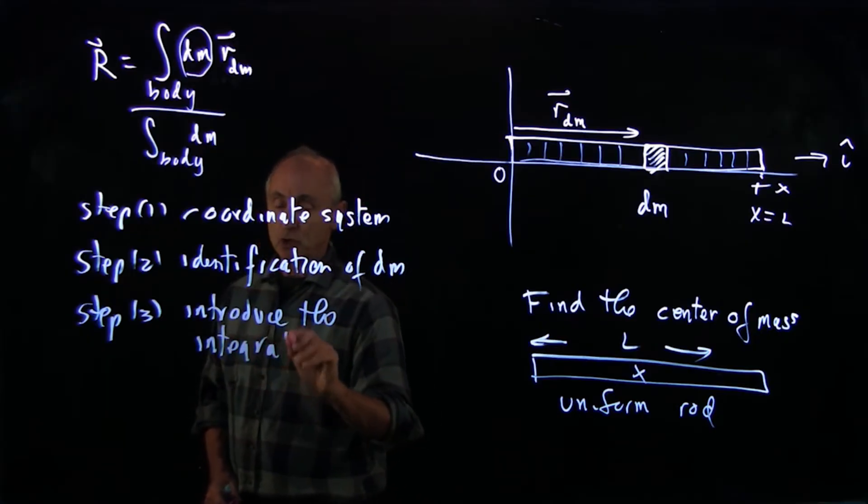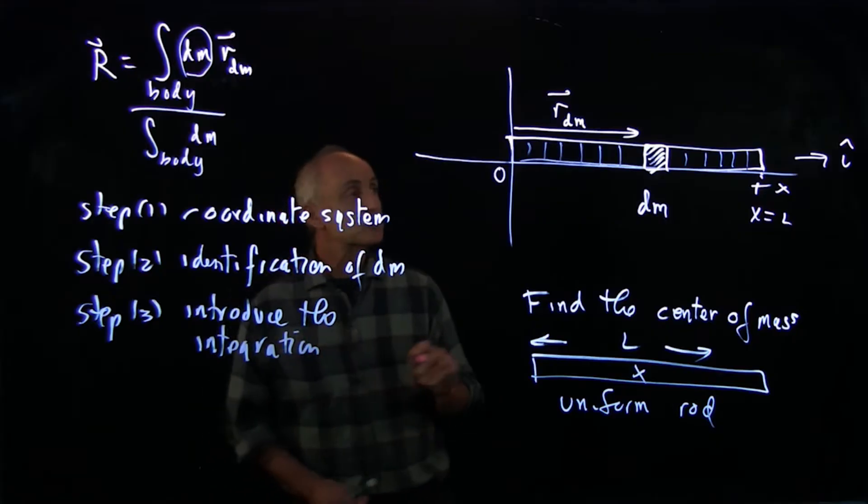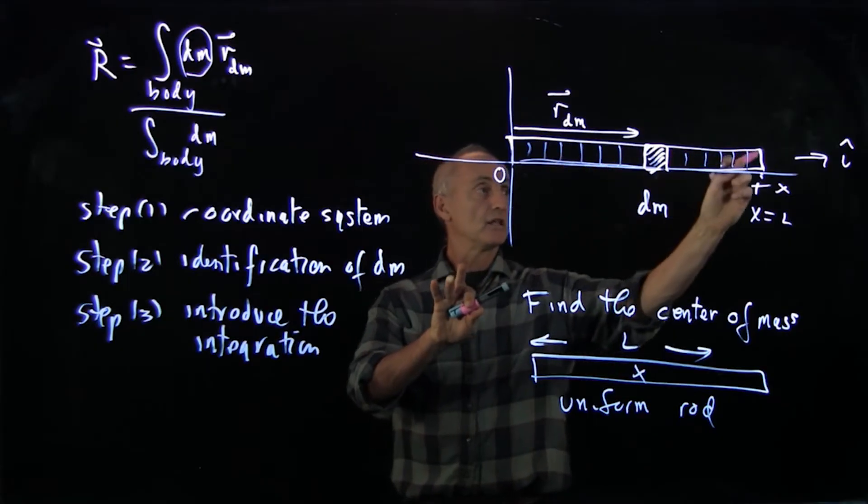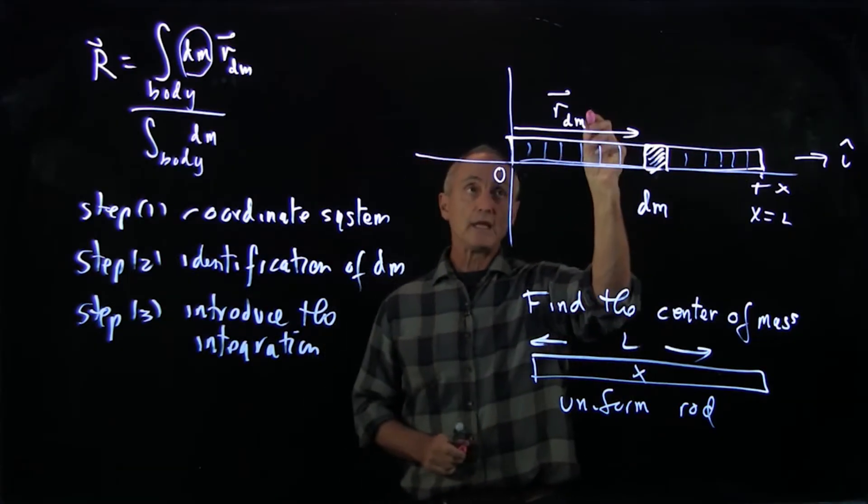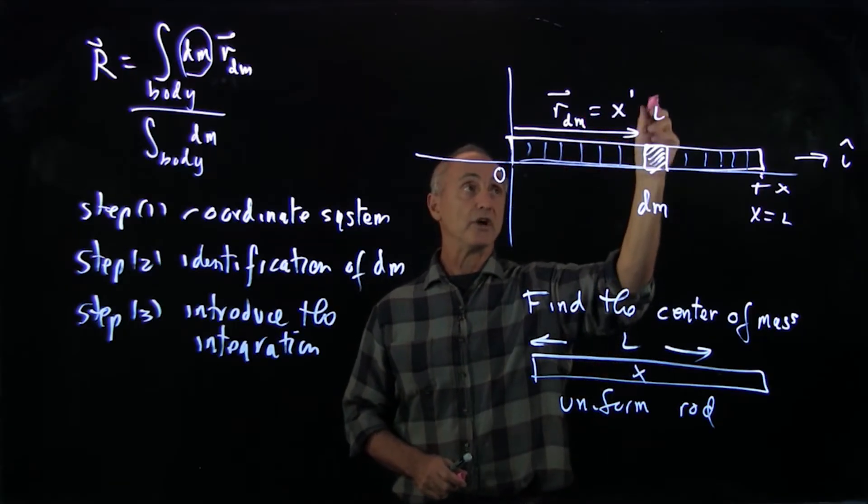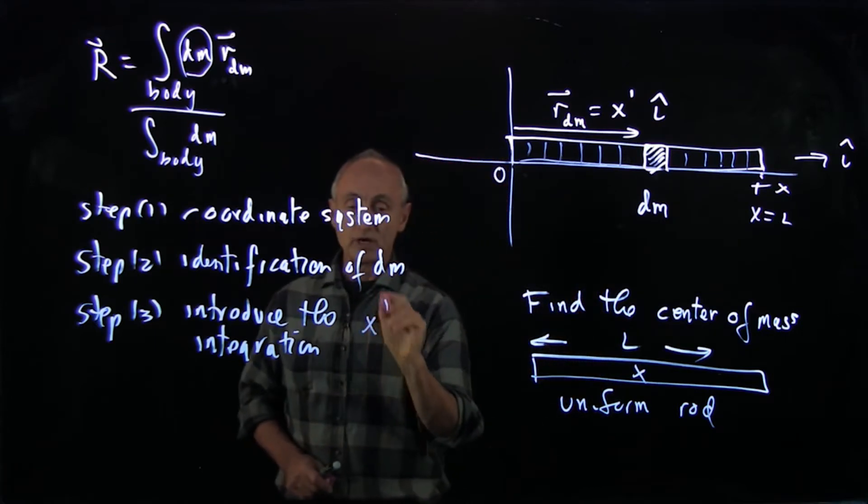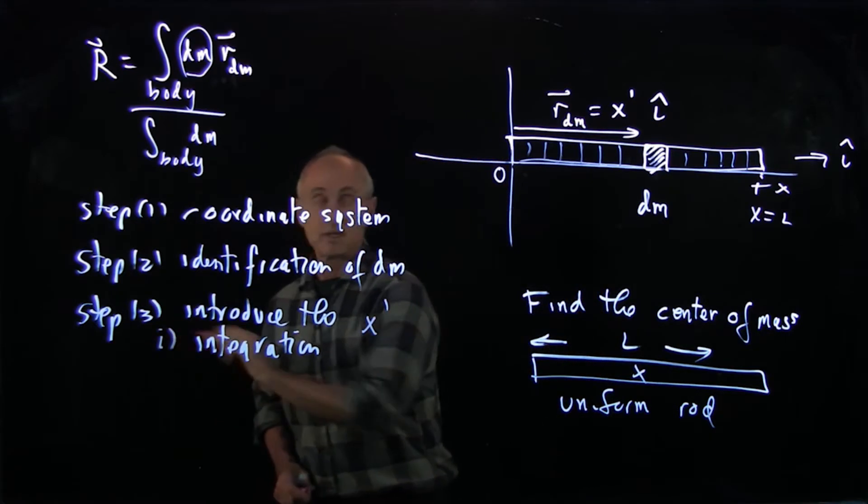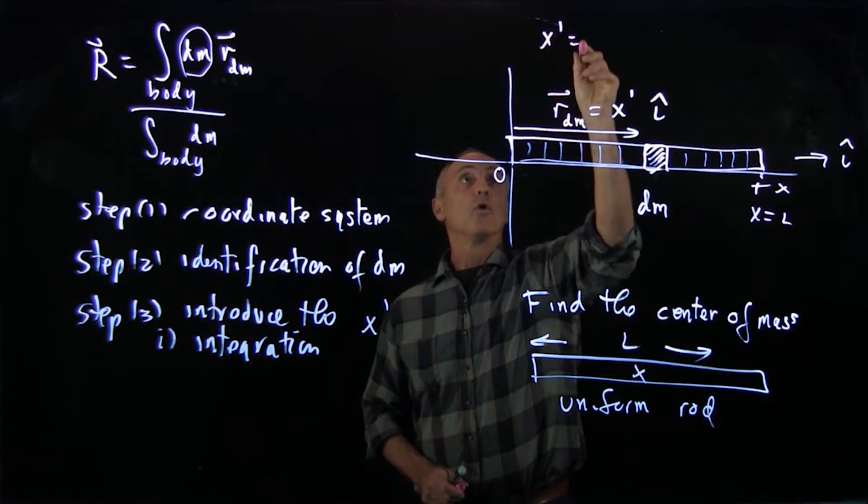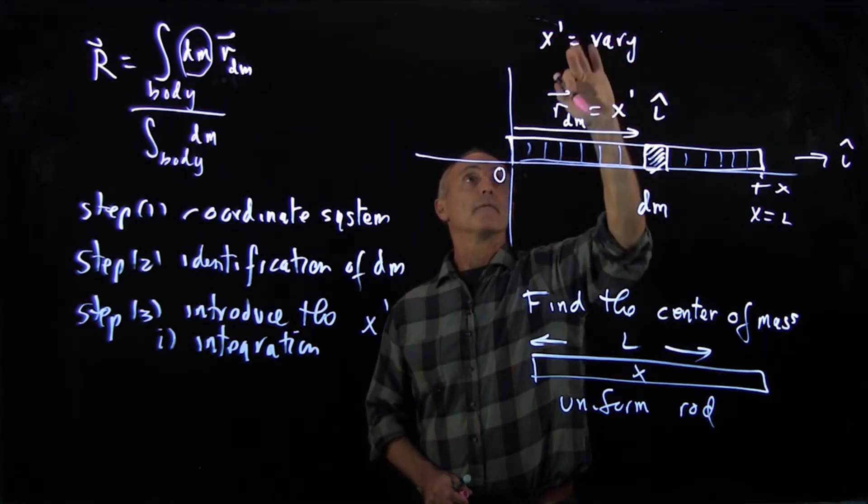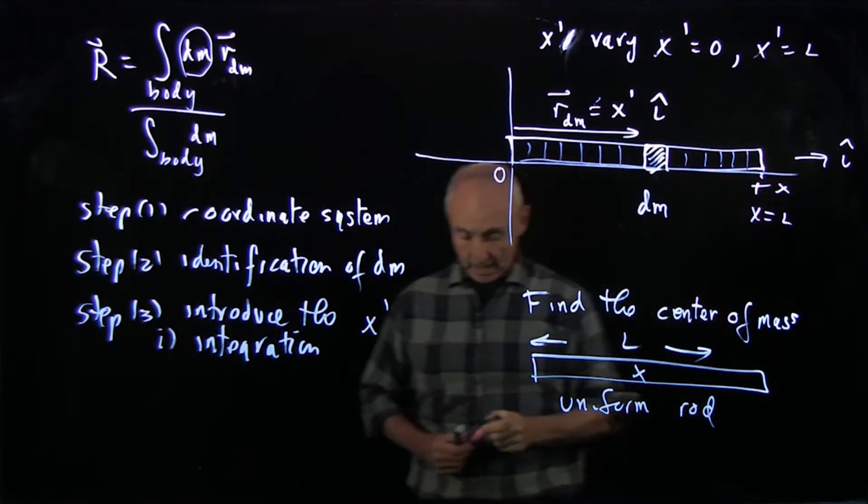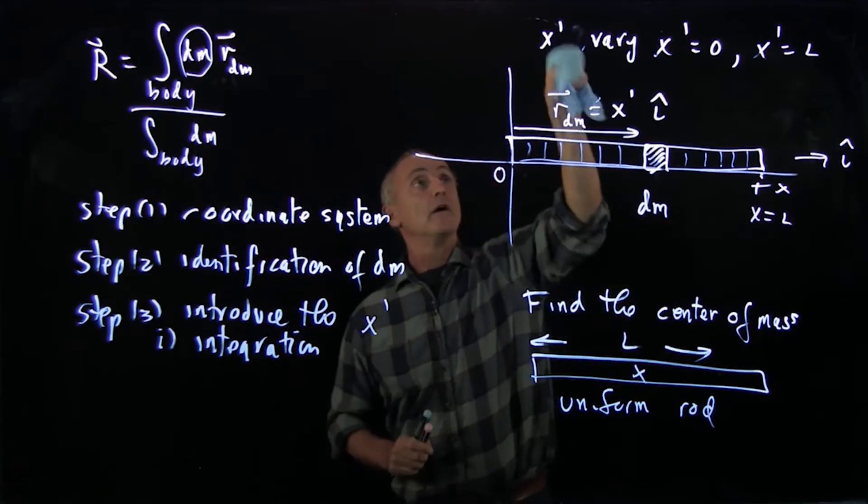Now, you'll see that will come in two different places. So this is the quantity, the distance from dm to the origin that's changing. You can see for each of these little elements, that changes. So what I'll write dm as a vector is x prime, which will be my integration variable in the i hat direction. So the integration variable is x prime. That's the first place that I introduce the integration variable. And x prime, you can see, will vary. And it varies from x prime equals 0 to x prime equals l. And that will show up in terms of the limits of my integral.